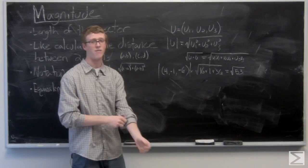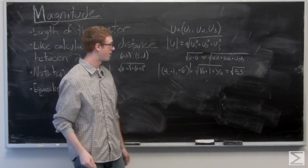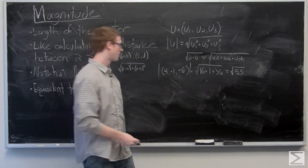So the magnitude of that vector is the square root of 53. We'll take a look at a vector in 2 space as well.